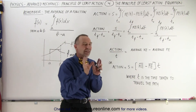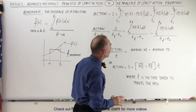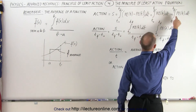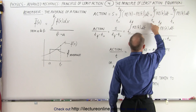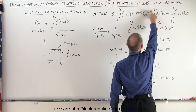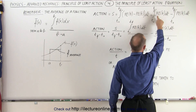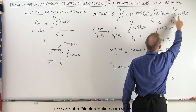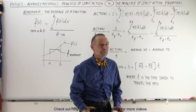Now let's separate those two portions of the equation inside the integral, and write it as two separate integrals. So it's the integral from t-initial to t-final of the kinetic energy as a function of time, minus the integral of the potential energy as a function of time.